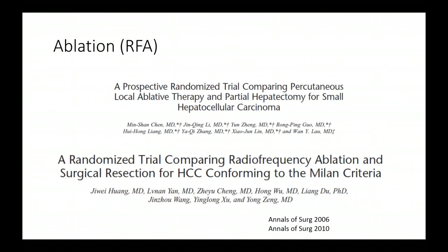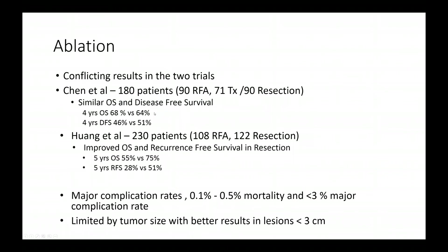Looking at the RFA data: there are multiple randomized studies from 2006 and 2010 randomizing hepatectomy versus ablation for small HCC. The older results showed similar overall survival and disease-free survival for tumors two centimeters or smaller. For larger tumors up to five centimeters, recurrence-free survival was an issue because ablating a five-centimeter tumor is incredibly difficult with available technology. A meta-analysis of all available data shows that for tumors less than three centimeters, survival is very close between resection and RFA, but above three centimeters, the risk of recurrence is higher.